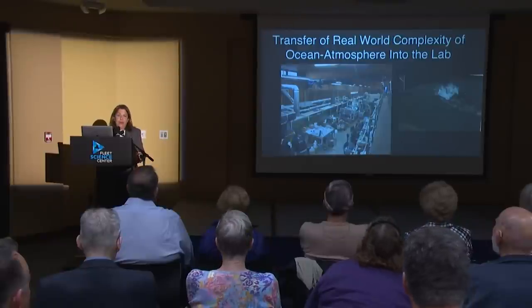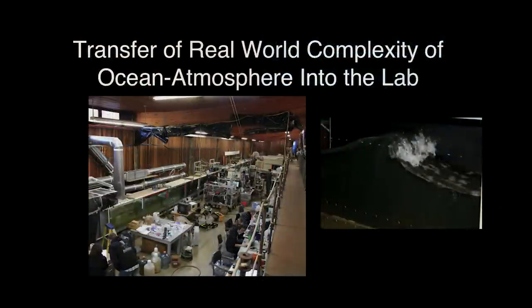We replicate the ocean-atmosphere in a controlled way, and the best place to do that is Scripps Institution of Oceanography. At Scripps they have the hydraulics lab with an ocean-atmosphere facility — an approximately football-field-long wave flume — where we have Pacific Ocean water. We put a lid on the ocean, purge the air above to make it particle-free, then break waves and study what we call nascent sea spray aerosol to capture exactly what's going on.